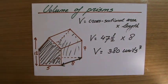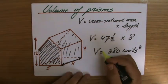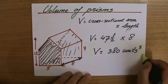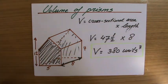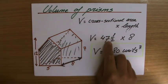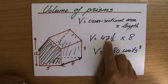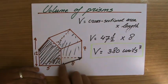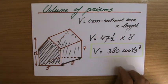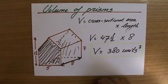So just to revise: how do we find the volume of a prism? We take the area of the cross section and then we multiply that by the length. So 47 and a half — the area of this compounded cross section — times 8, the distance between those two similar sides. I'll have another example video for you.